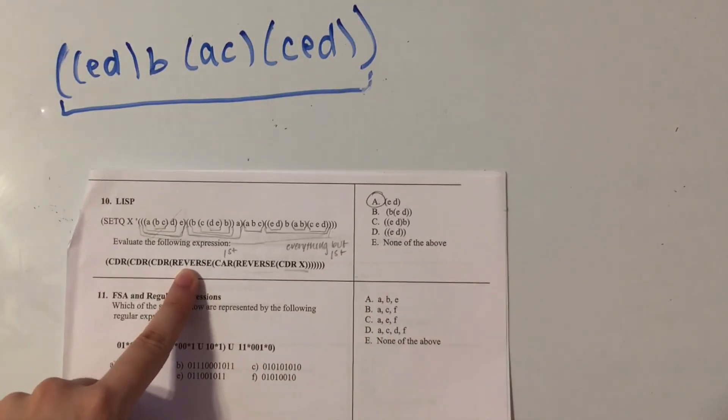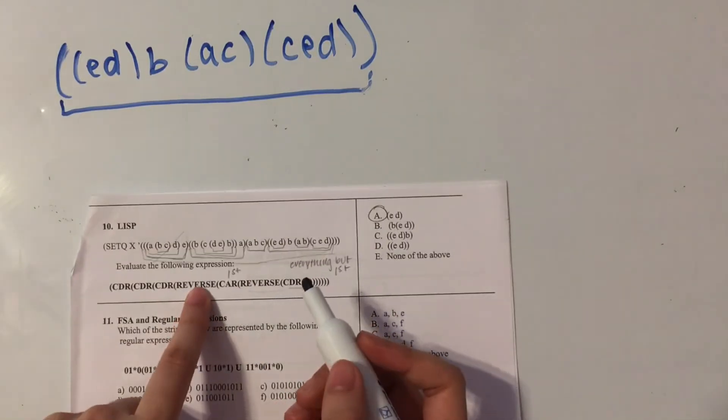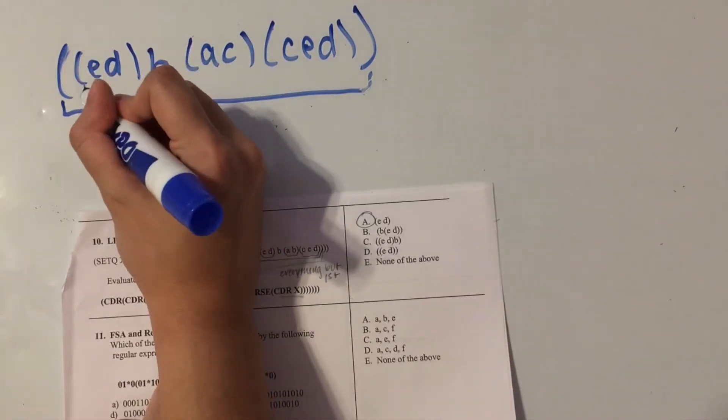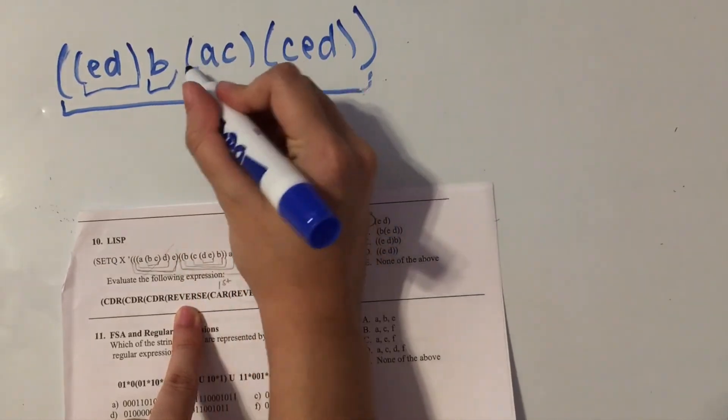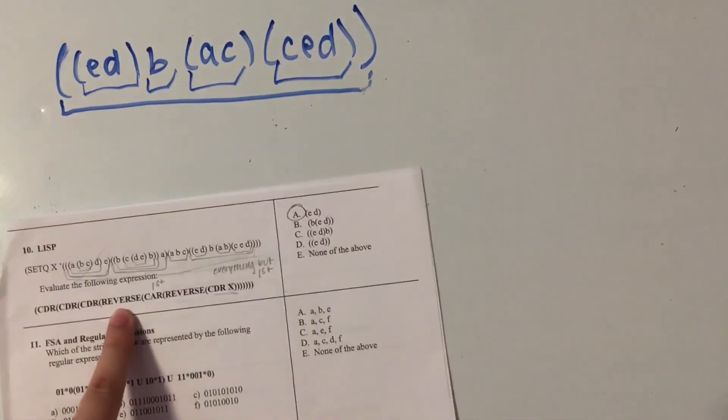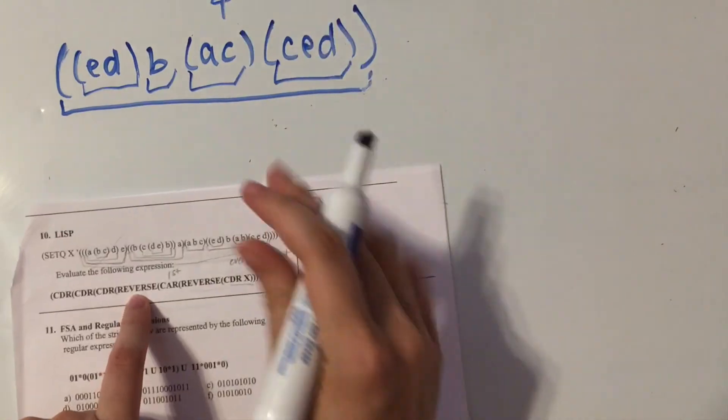So now we have to reverse it. Okay, so let's see what our components of this list are. We have this one list, single element, another list, and one last list. So this has four elements, which we have to reverse.